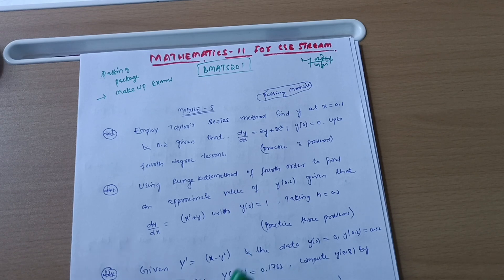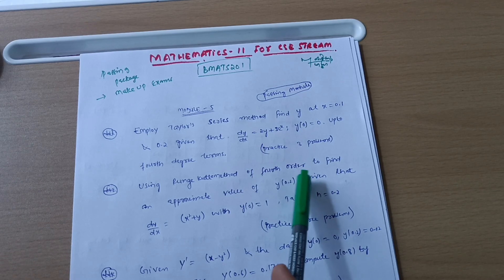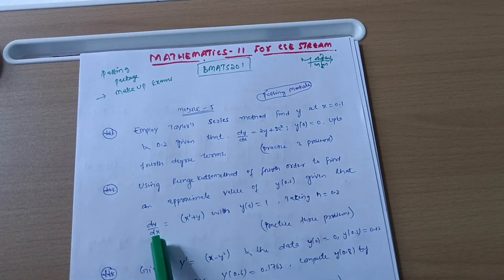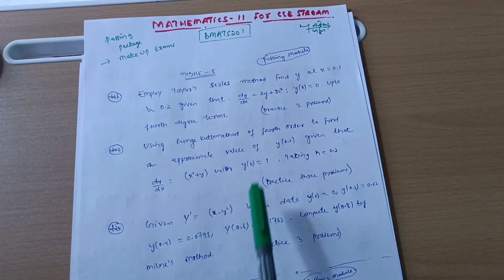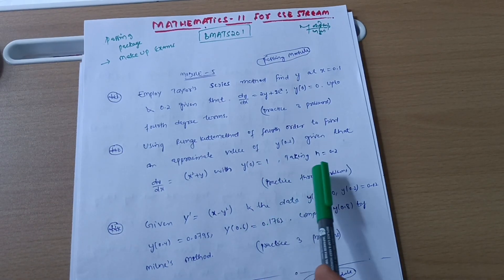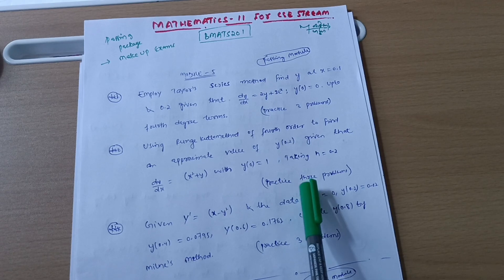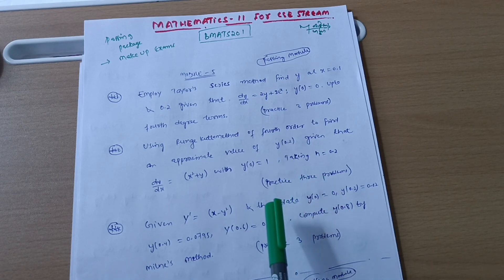This module should be at your utmost priority — these 20 marks are just in your pocket. Videos are already available for these concepts and I will provide the links in the description box. The second concept is the Runge-Kutta method of fourth order — for example, find an approximate value of y(0.2) given that dy/dx = x² + y with y(0) = 1, taking h = 0.1 as the step length. Practice at least three problems from Runge-Kutta method.